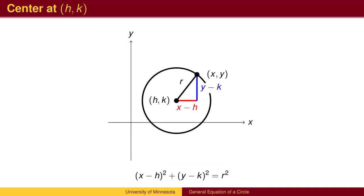In general, we have x minus h squared plus y minus k squared equals r squared.